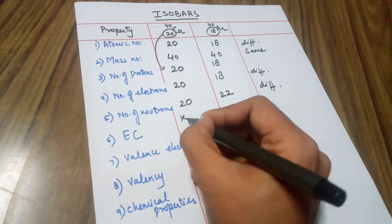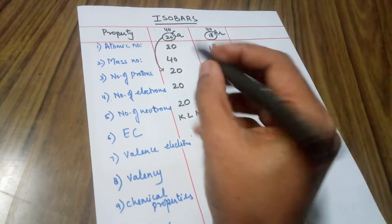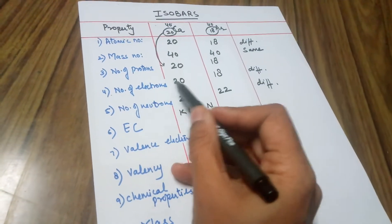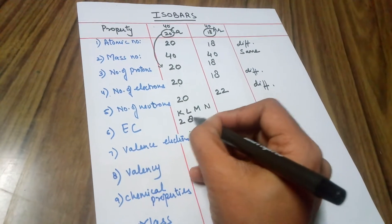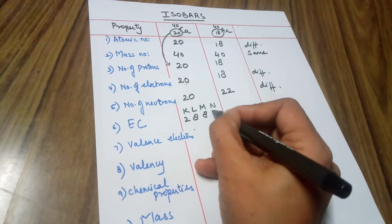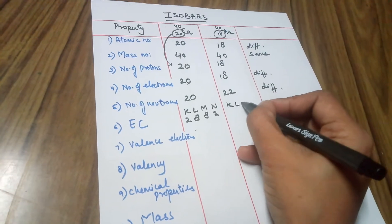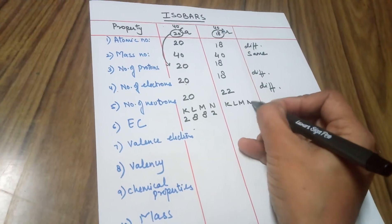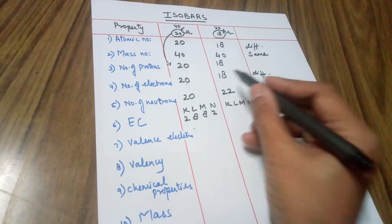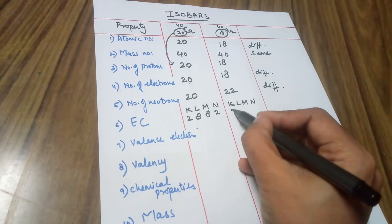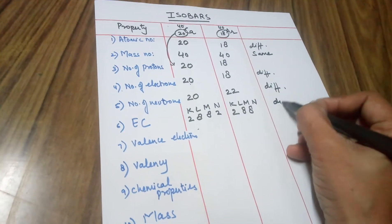EC is the electronic configuration. For calcium, the number of electrons is 20, so the electronic configuration would be 2, 8, 8, 2 — across shells K, L, M, and N. For argon, the number of electrons is 18, so the electronic configuration would be 2, 8, 8. Again there is a difference.